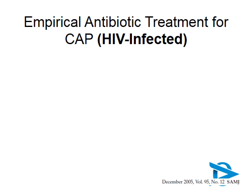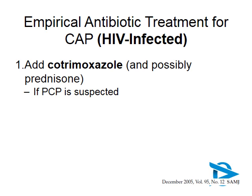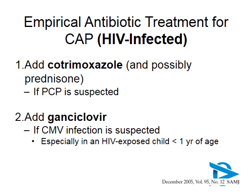For HIV-infected children not responding to first-line pneumonia treatment, consider adding co-trimoxazole. You may have to add it from the beginning if Pneumocystis jirovecii pneumonia is strongly suspected. Also keep in mind CMV infection, especially in infants under one year who are very immunosuppressed — you may need to add ganciclovir. In those scenarios, you should be discussing these children with a pediatrician.